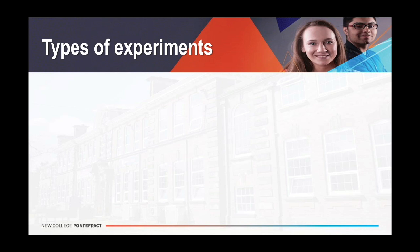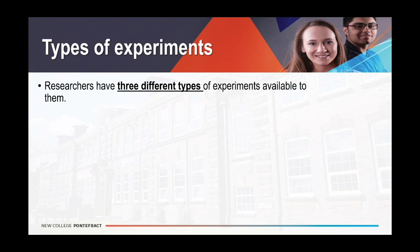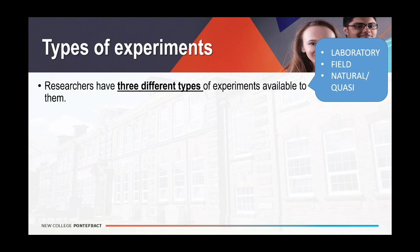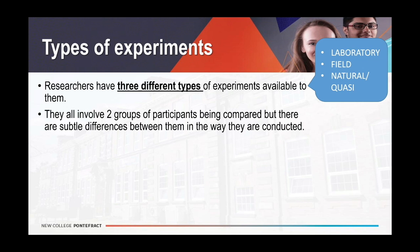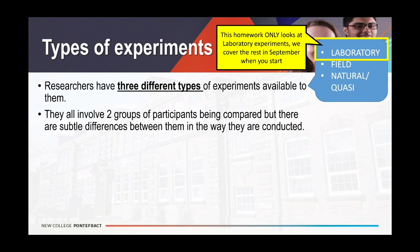Now we've got the basics of the golden rule — manipulating an IV and measuring a DV to establish cause and effect. You also need to know that there are three different types of experiments available to a psychologist: a laboratory experiment, a field experiment, and what we call a natural or quasi experiment. They all involve a minimum of two groups, but there are subtle differences in how they are conducted. The only one we're going to concentrate on in this homework is the lab experiment. The rest you will cover when you start in September.